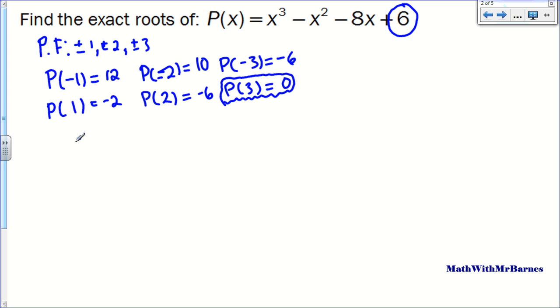So what I do is I take my x-intercept, my solution, and then synthetically divide this guy. So I'll do 1, negative 1, negative 8, and then 6. If I do it correctly, I know this should be 0 right here.